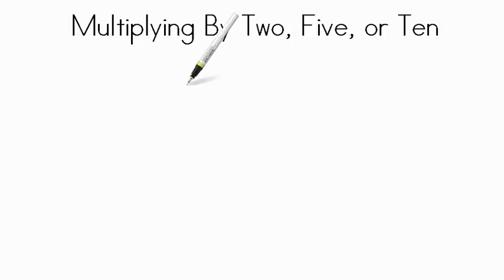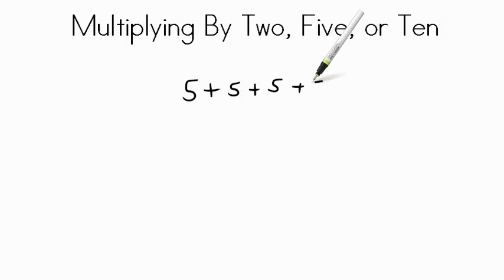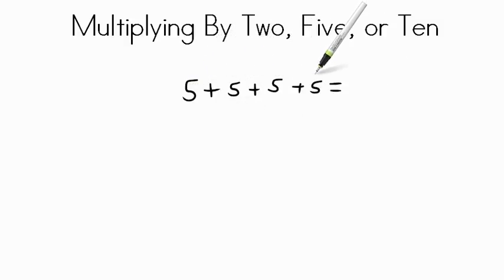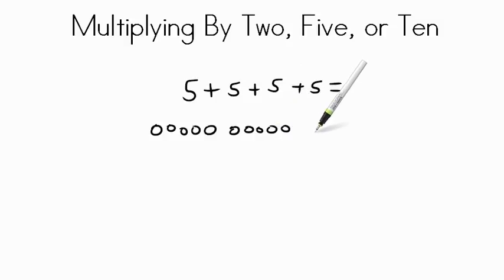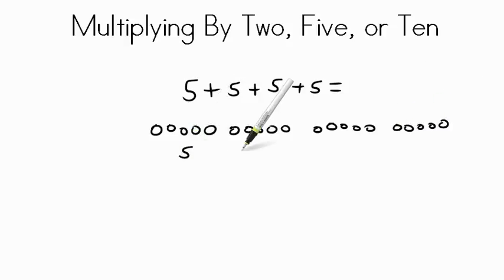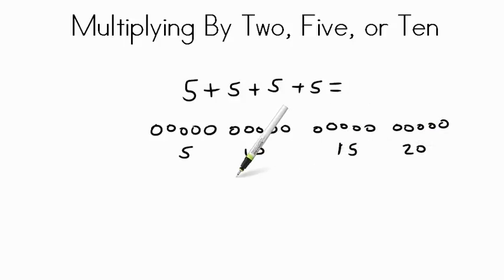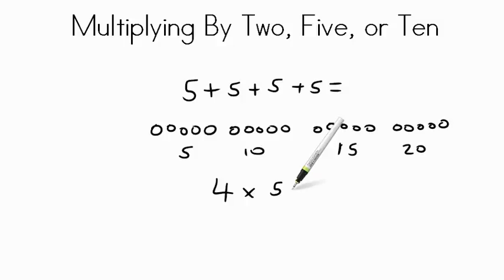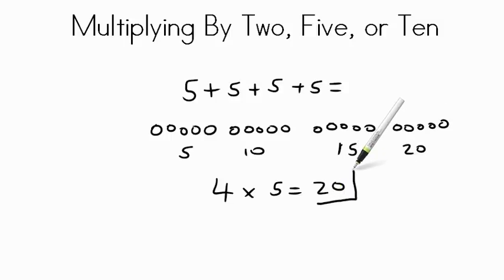Let's take a look at another one by 5's. If I gave you the numbers 5 plus 5 plus 5 plus 5 plus 5, if we can skip count by 5's, we can easily figure out the number: 5, 10, 15, 20. That's one group of 5, another group of 5, another group of 5, another group of 5. 5, 10, 15, and 20. If we look at that in multiplication, 4 groups of 5, that's the same as saying 4 times 5 equals 20. So by being able to skip count those groups, you can easily find that product or answer of 20.